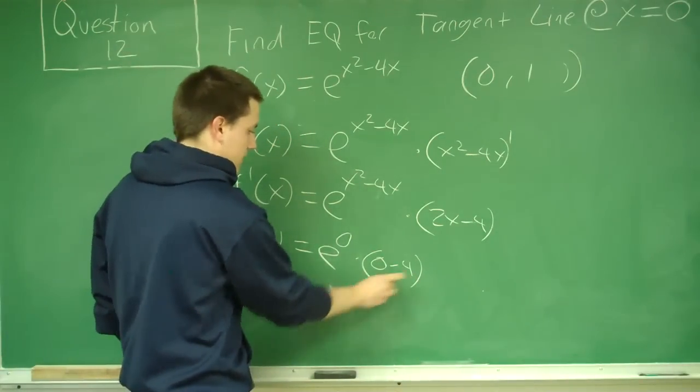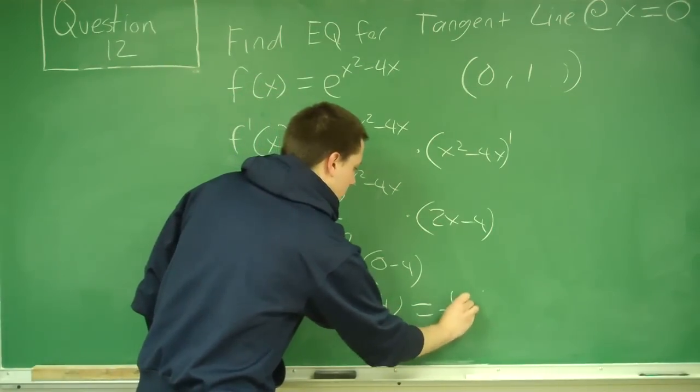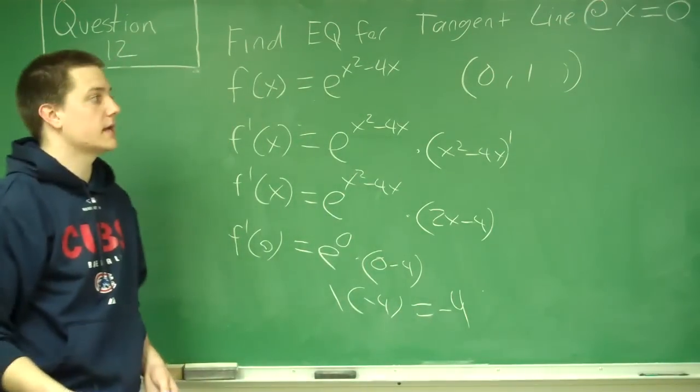Just plug that in. This is 1, that's negative 4. So our slope now is negative 4.